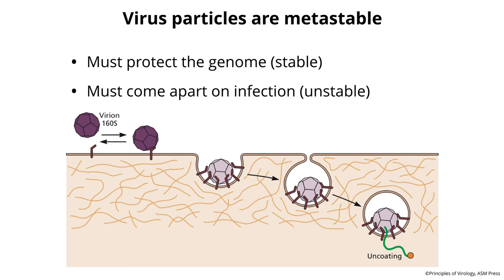Another concept to wrap your head around is that virus particles are metastable. They have a stable form where they protect the genome, and an unstable form where they come apart and release the genome. That poliovirus on the table with the RNA coming out represents the metastable form — it travels among hosts and within you, but at some point it has to release the genome.